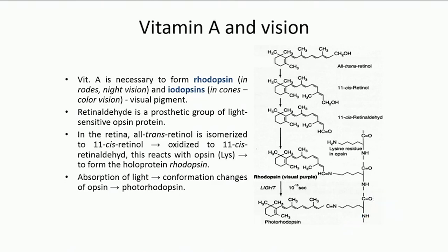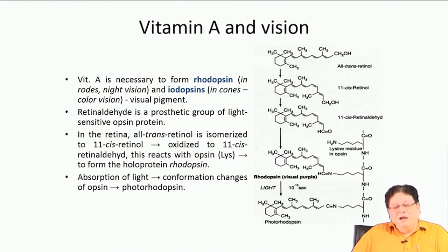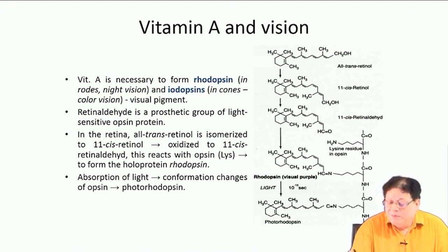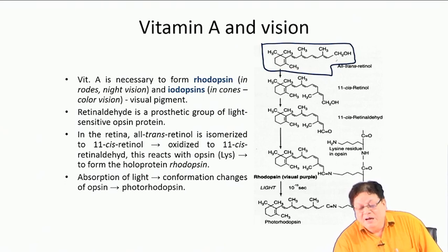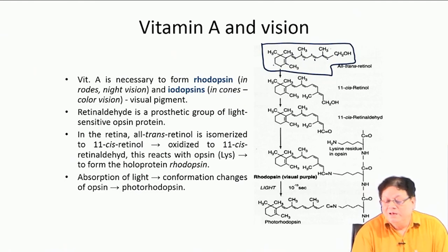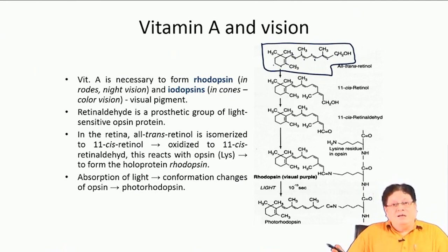We will start with vitamin A. Vitamin A is necessary for vision. The chemistry of vision begins with a molecule called retinol. Looking at its structure, counting the carbon atoms gives 20 carbons — so it is a diterpene, derived from the biosynthesis of terpenes.